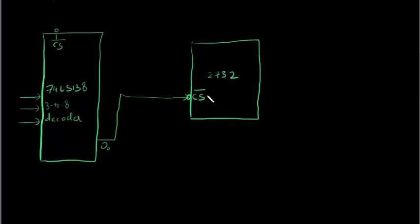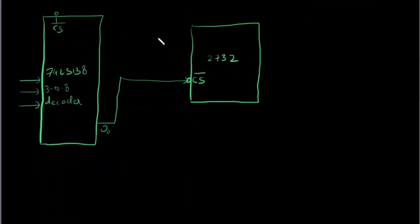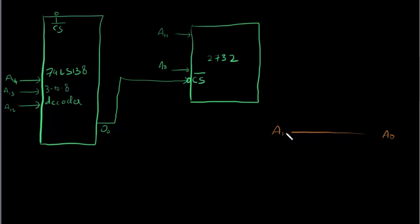Now what else will be added is 12 address lines. See, we found out 12 address lines, so we will add A0 to A11. These are 12 address lines. And then this will be A12. This will be A12, this will be A13, and this will be A14. Now I would like to draw attention that we have used from A0 to A11, A12, A13, A14, A15.